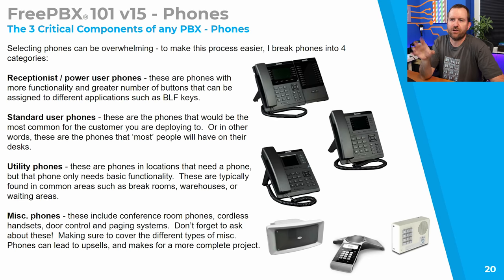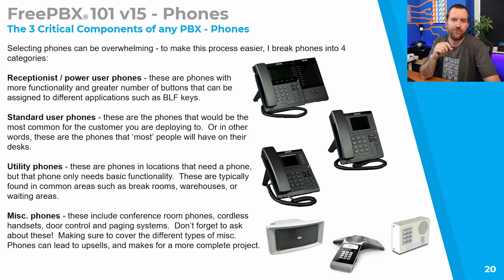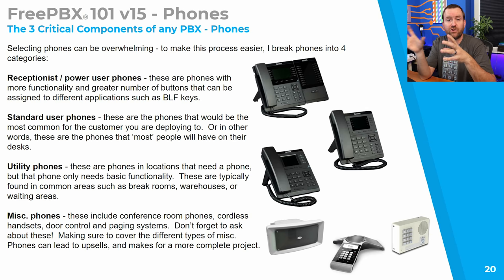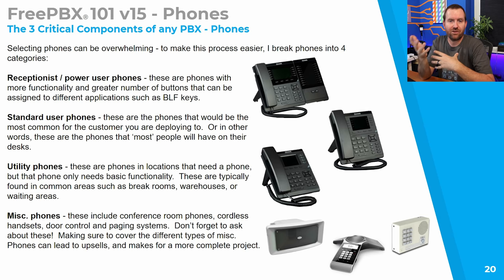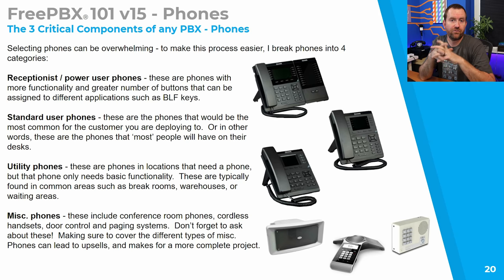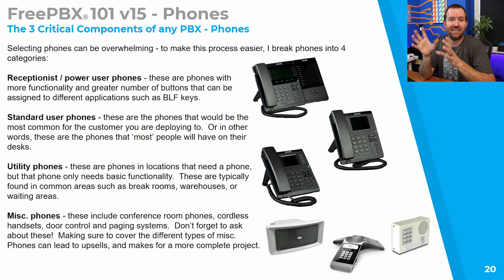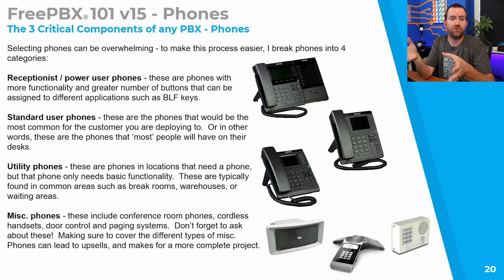Let's move on to our third and final category: phones. What kind of phone are you going to have on everyone's desk, for the receptionist, for the break room? When talking to customers about phone types, I break them into four categories: receptionist or power user phones with lots of buttons and functionality and optional sidecar modules; standard user phones for most people's desks; utility phones for the break room or warehouse where you need a phone but not tons of functionality; and miscellaneous phones — cordless handsets, conference room phones, paging systems or speakers.